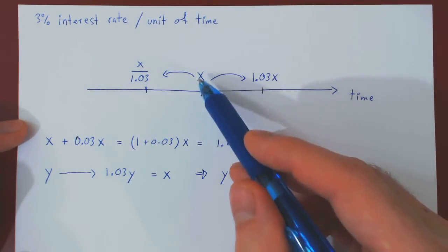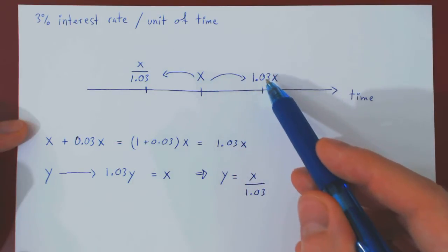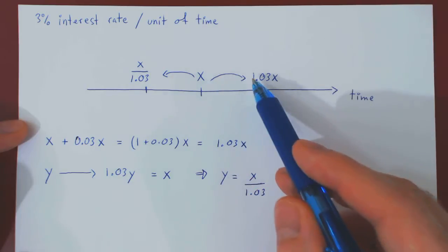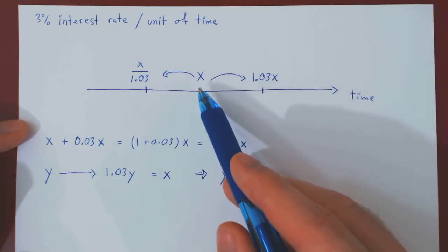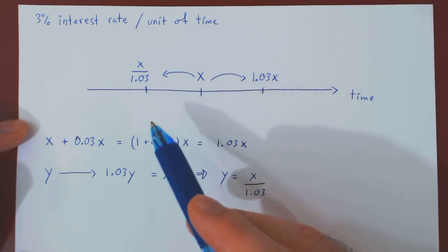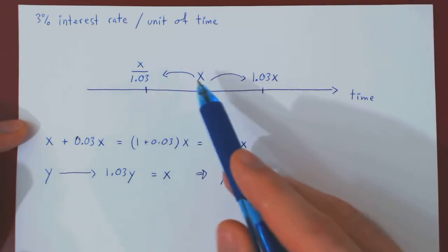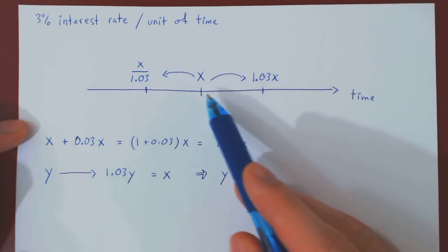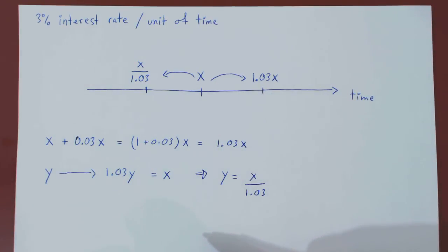So always remember that when you move an investment in time forward by one unit, it is multiplied by 1 plus the interest rate. If it is moved backward in time, it is divided by 1 plus the interest rate over, of course, the given unit of time. And that's it.